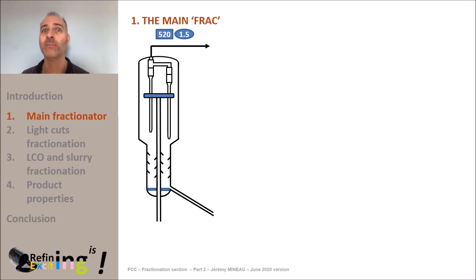When the effluent in gas form comes out of the reactor, its temperature is around 520 degrees Celsius. Then this effluent is routed to the main fractionation column, also called main frac.